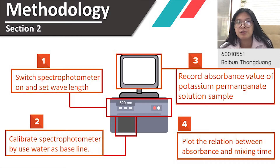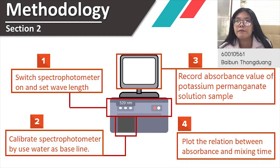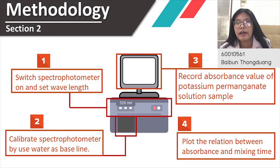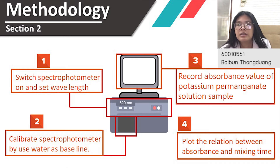Section 2: Finding the concentration of the potassium permanganate solution sample from Section 1. First, service the spectrophotometer and set the wavelength at 520 nanometers. Next, calibrate the spectrophotometer using water as the baseline. Then record the absorbance value of the potassium permanganate solution samples. The final step is to plot the relation between absorbance and mixing time.